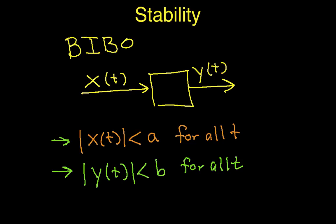Conceptually, what this means is that as long as the input does not get to be too large — so as long as this stays bounded — then the output stays bounded. And the idea is that that usually means that the system is stable, meaning that the system does what you want it to do, or at least doesn't do what you don't want it to do.